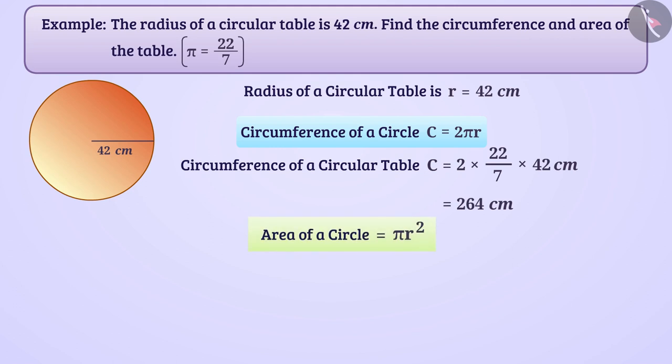to find the area of a circle, we will use this formula. Hence, the area of circular table is 22/7 × 42 cm × 42 cm = 5544 square cm.